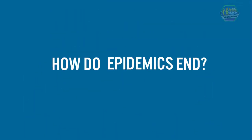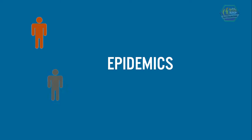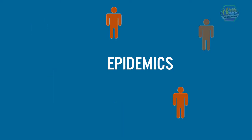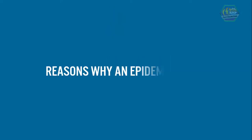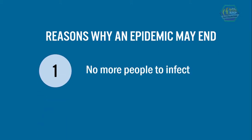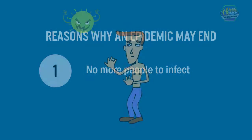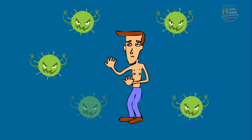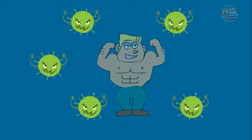So how do epidemics end? Even though epidemics are scary and can spread quickly — where millions of people may perish — they eventually do come to an end. There are a few different reasons why an epidemic may end. First is when there are no more people to infect. When an epidemic starts out, it usually attacks the weakest and most susceptible people. Those people may perish or survive.